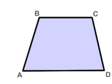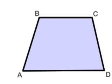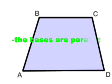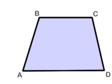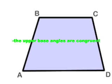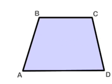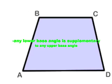An isosceles trapezoid is a trapezoid in which the non-parallel sides are congruent. In an isosceles trapezoid, the legs are congruent, the bases are parallel, the lower base angles are congruent, the upper base angles are congruent, the diagonals are congruent, and any lower base angle is supplementary to any upper base angle.